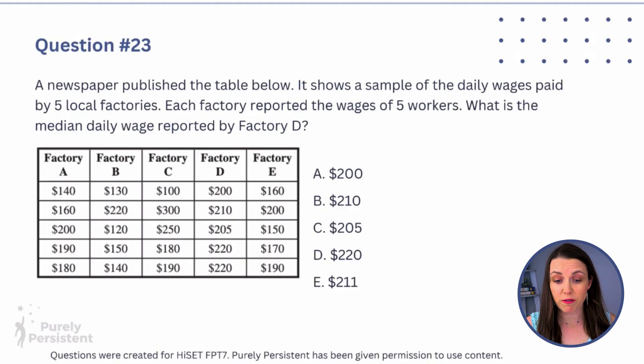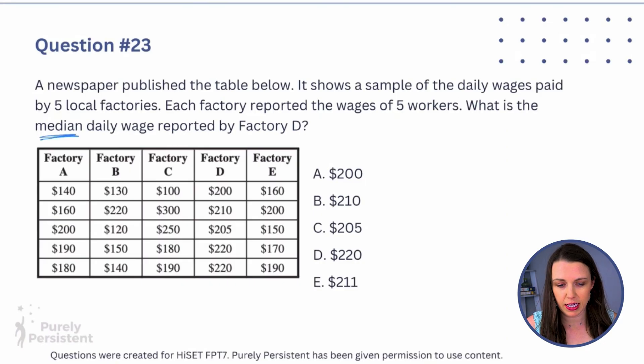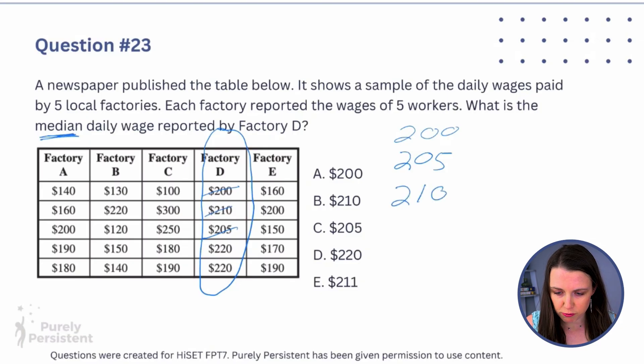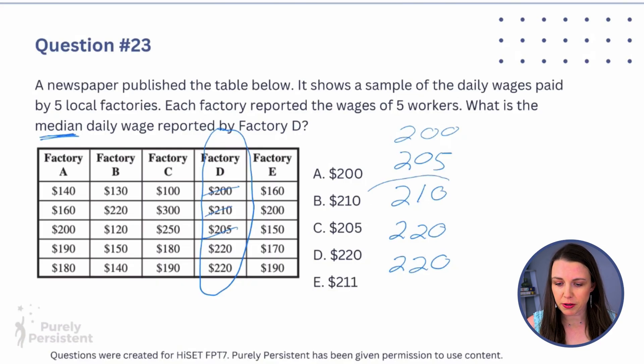Question 23: A newspaper published a table showing sample daily wages paid by five local factories, each reporting wages of five workers. We're looking for the median daily wage reported by Factory D. To find the median, put the numbers in order from lowest to highest: 200, 205, 210, 220, 220. The middle number is 210, so the answer is B.